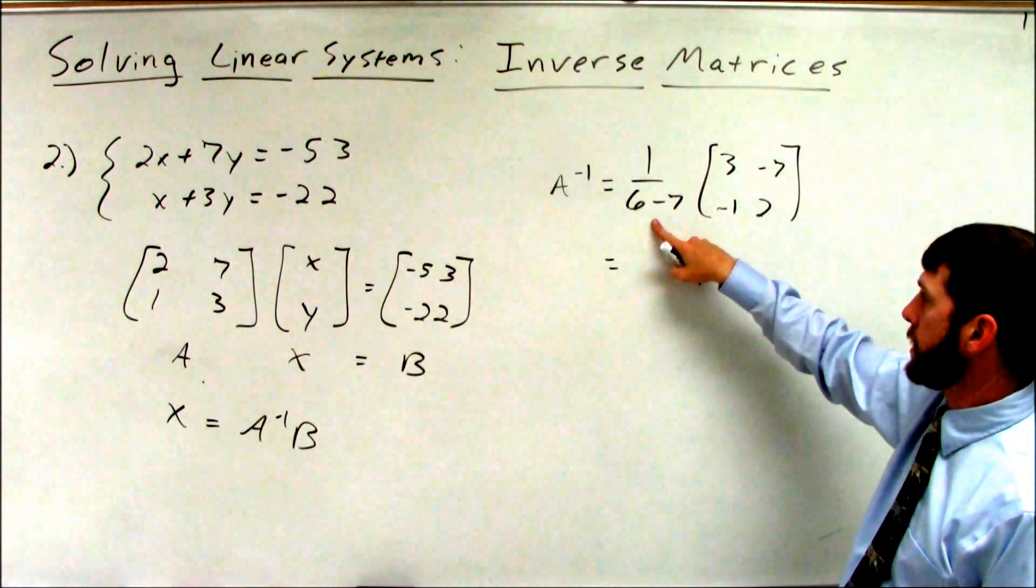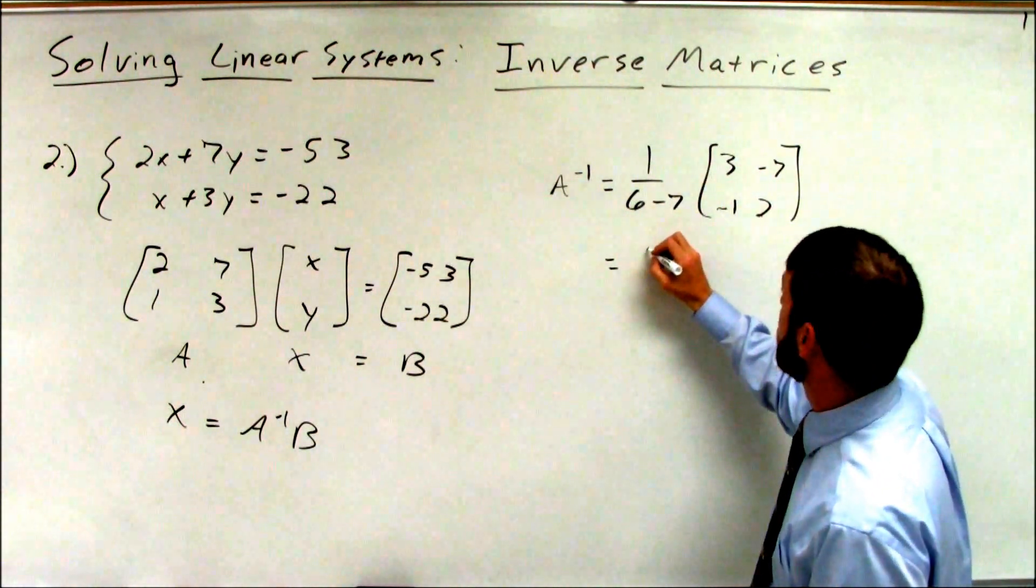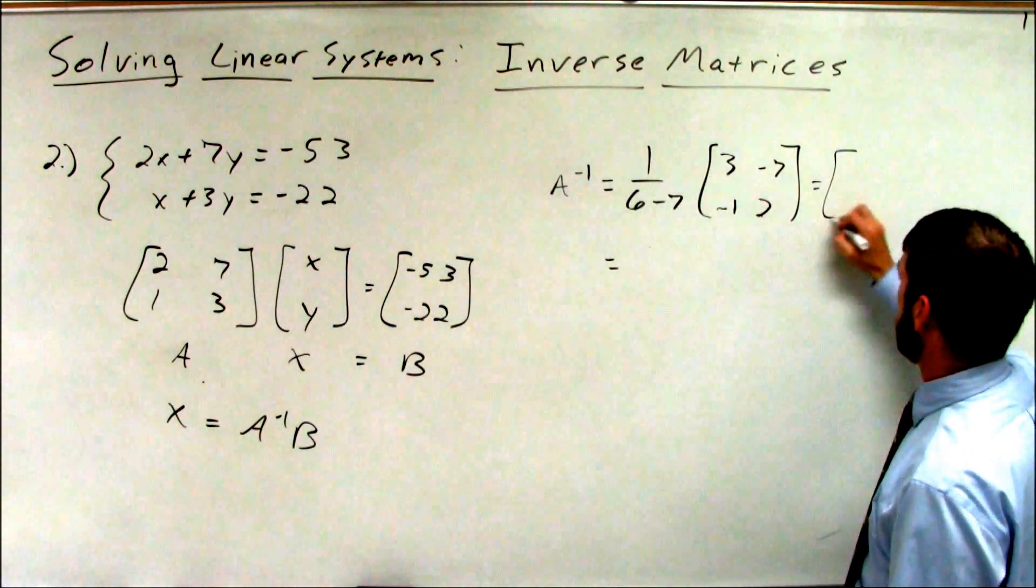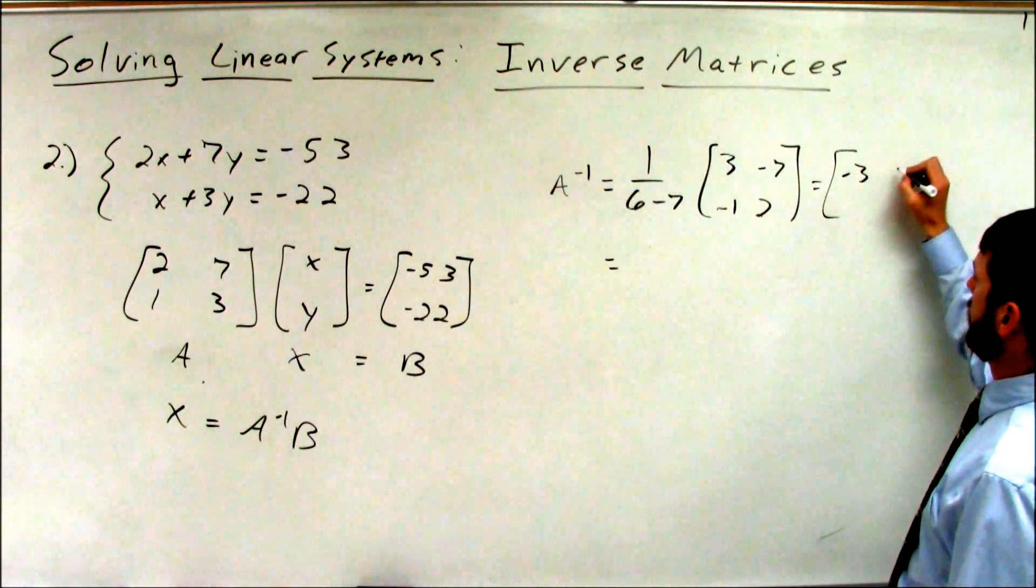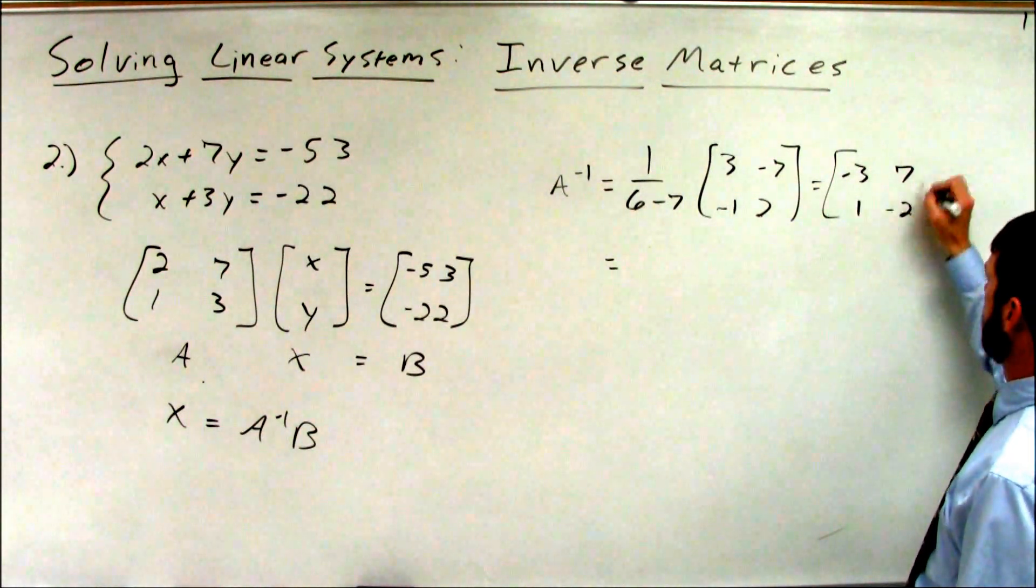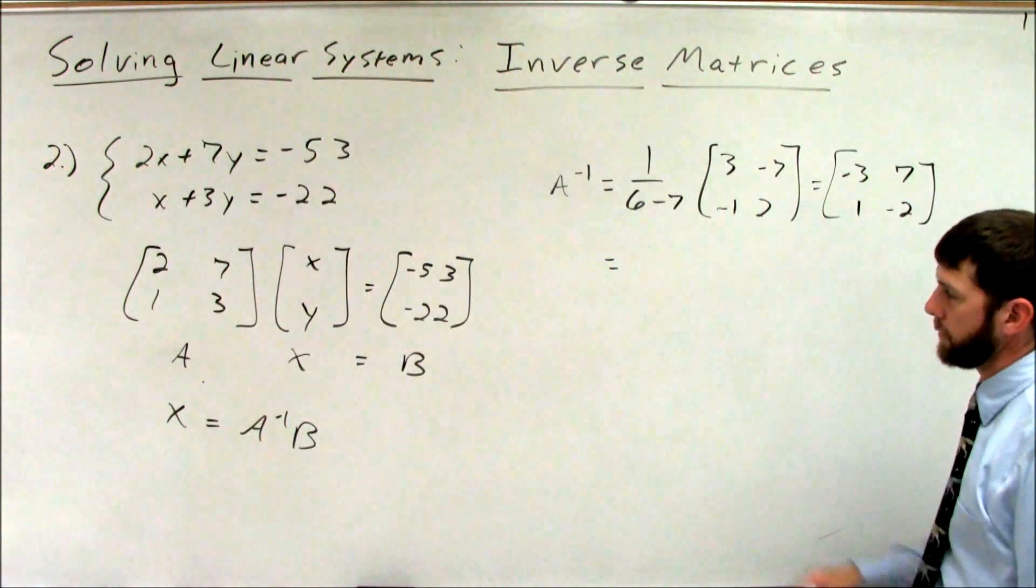1 over negative 1 is negative 1. Negative 1 times all of these. I will put it right here. Negative 3, positive 7, positive 1, negative 2. So I just distributed my scalar here.